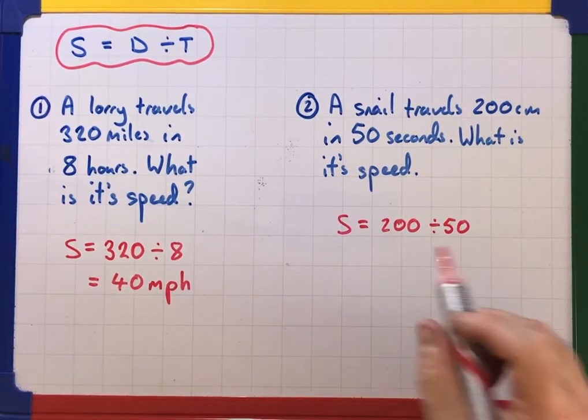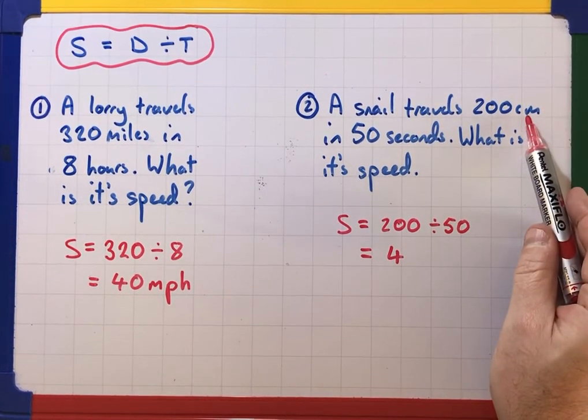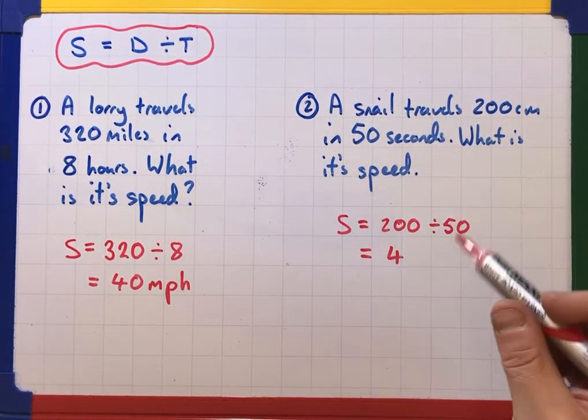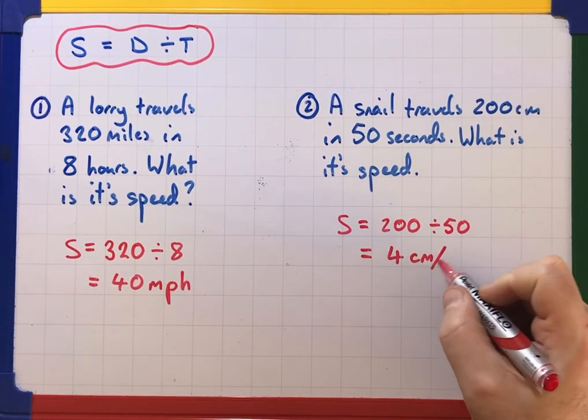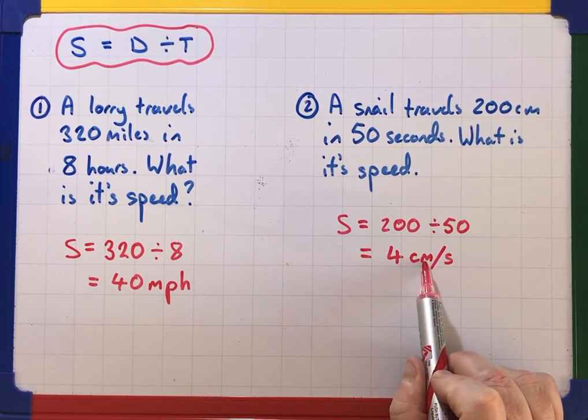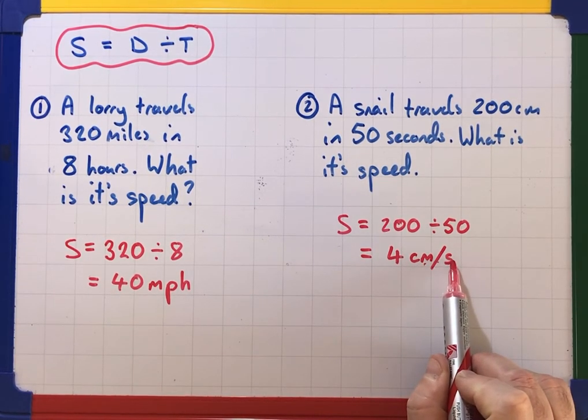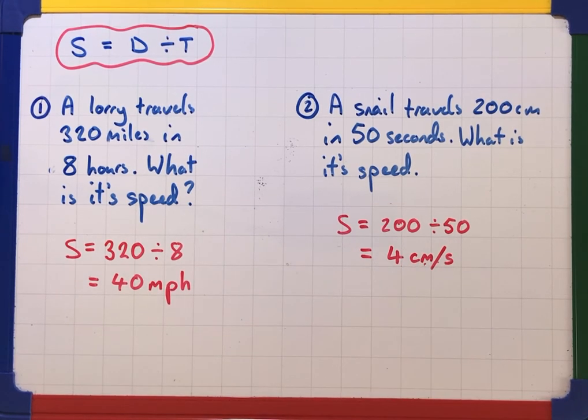Okay so that gives us 4. Now it's centimeters per second isn't it? So I could write centimeters. Now we quite often do a line like that and seconds to say centimeters per second. Okay so that would just mean 4 centimeters per second. That would be the speed of this snail.